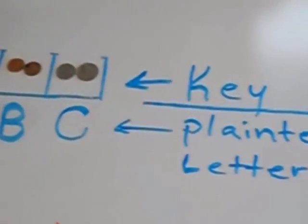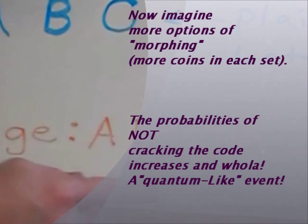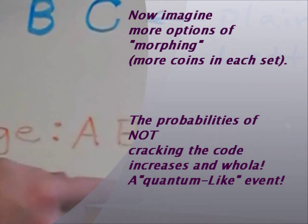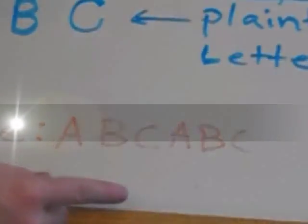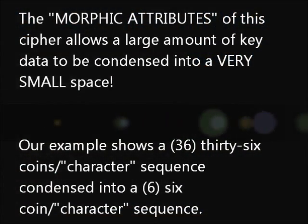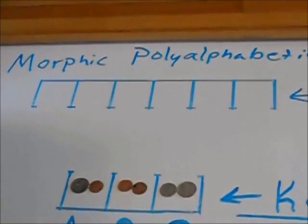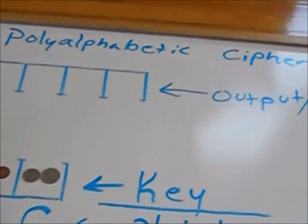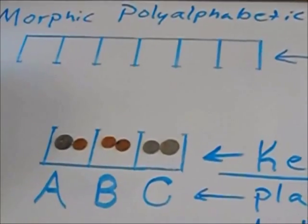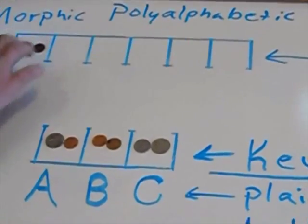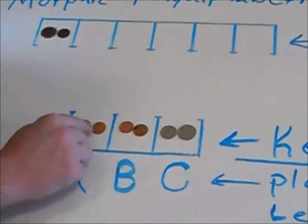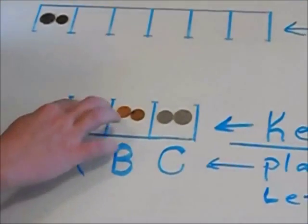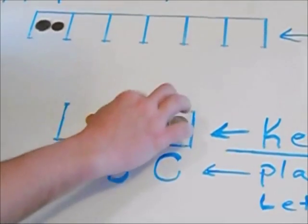And this is our output up here. We look at our first letter in the message A and we see that we have a quarter and a penny which represents the A. So we are going to put that up there in our output. Then we are going to select at random either the quarter or the penny and swap with something else in the key.